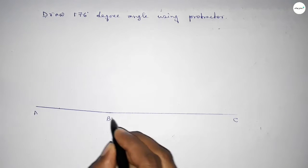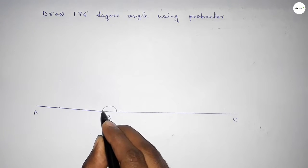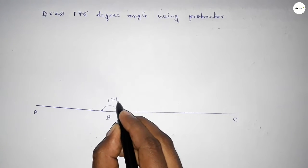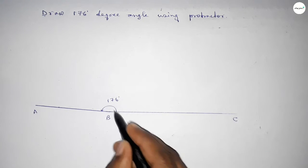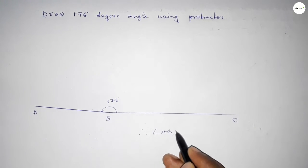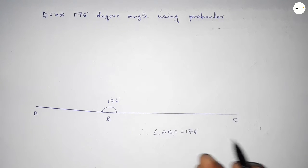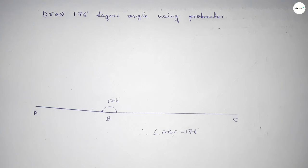So angle ABC, up to this, this is a 176-degree angle. Therefore, angle ABC equal to 176 degrees. That's all, thanks for watching. If this video is helpful to you, then please share it with your friends.